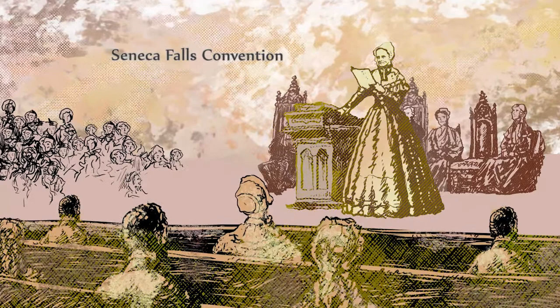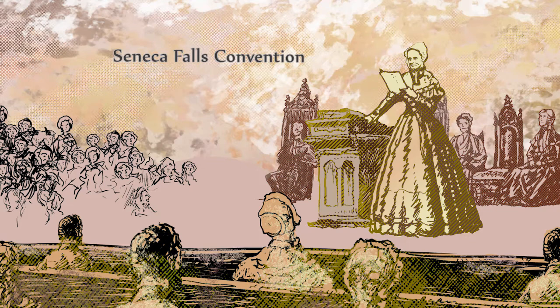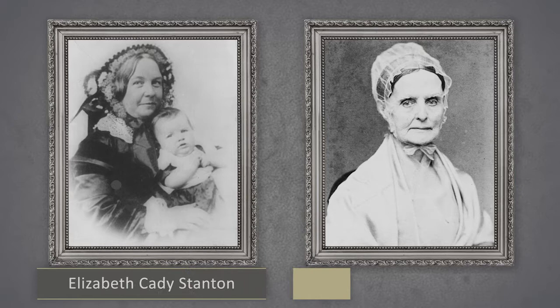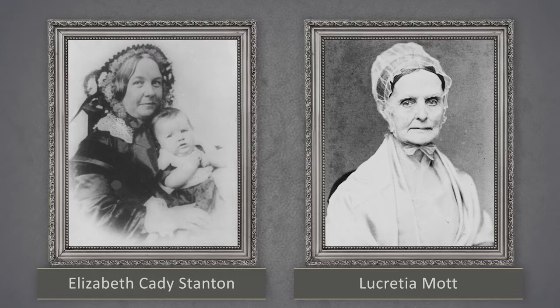In July 1848, the suffrage movement began with the Seneca Falls Convention, also known as the National Liberty Convention, which was led by Elizabeth Cady Stanton and Lucretia Mott. The convention was a forum for highlighting the inequalities of women politically, socially, economically, and in religious life.